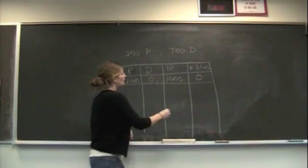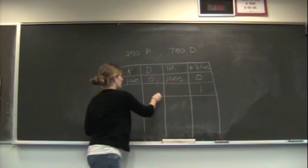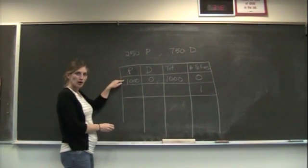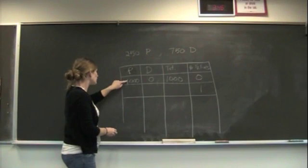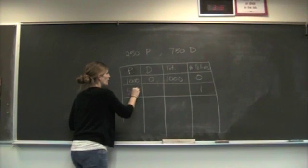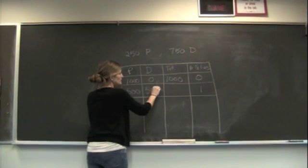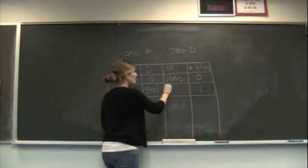After one half-life, that's going to be the first step, half of the parent is going to be converted into the daughter. So 1,000 divided by 2 is 500. The other 500 are now the daughter isotope, and our total remains the same.